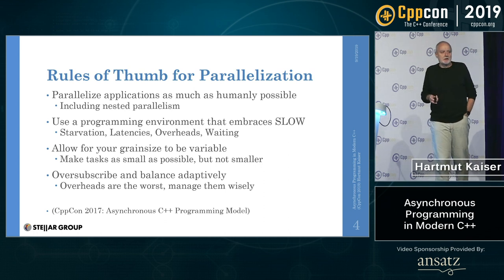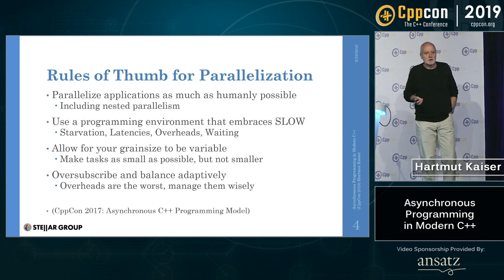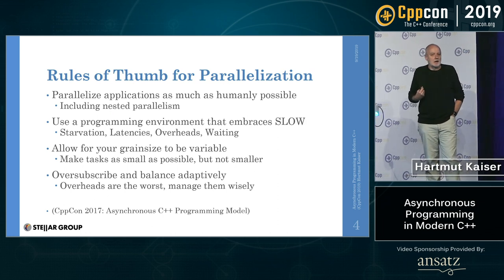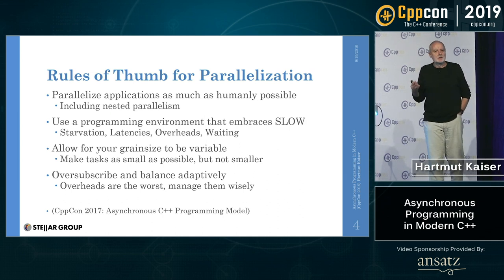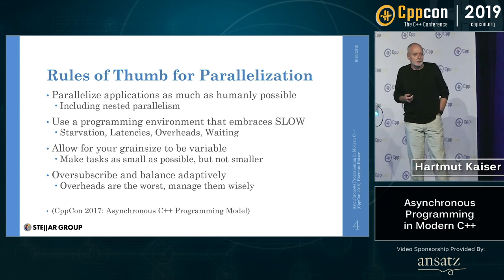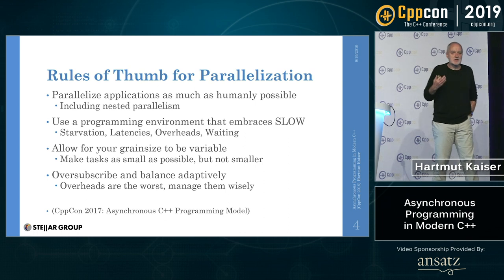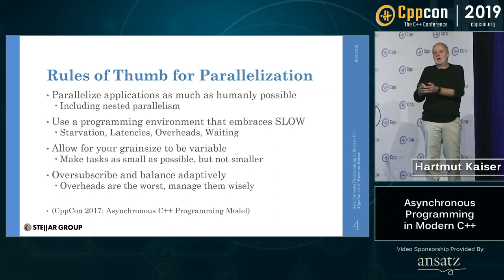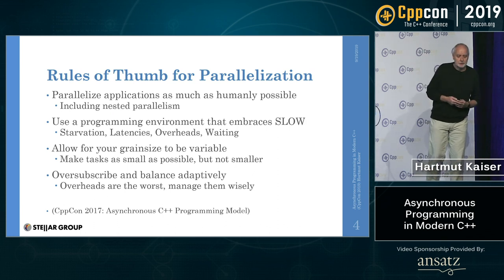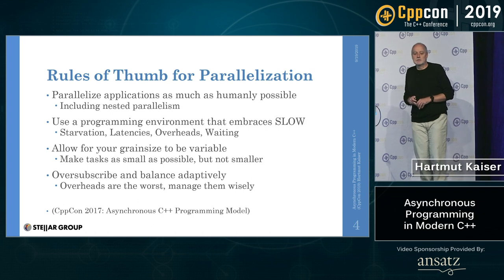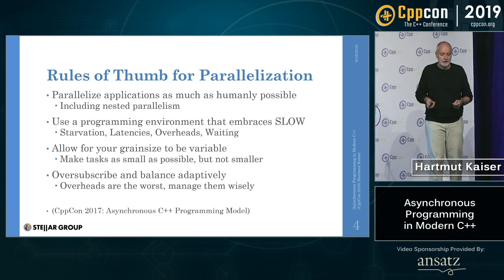Third, you want to allow for variable grain size — when you parallelize, you want to control the amount of work performed on a single thread. You want to make the tasks you execute in parallel as small as possible, but not smaller. Last but not least, over-subscribe wherever you can: have more work, more data partitions available than you have cores. This bridges starvation gaps. And you have to control overheads, because the more parallelism you have, the larger your overheads are.